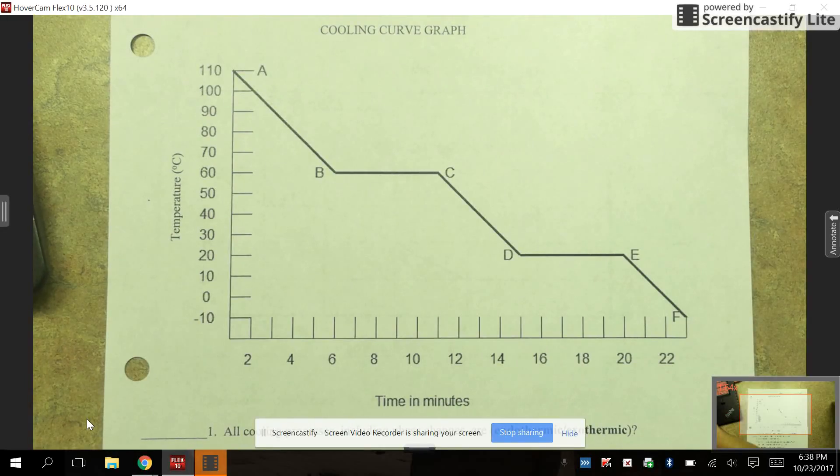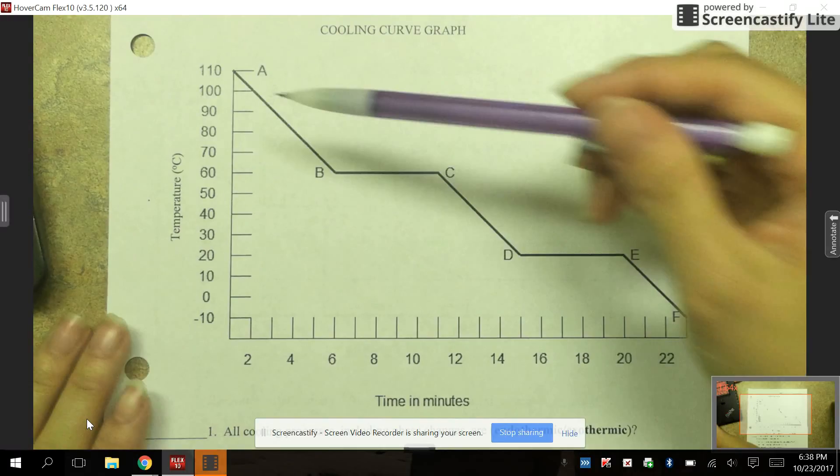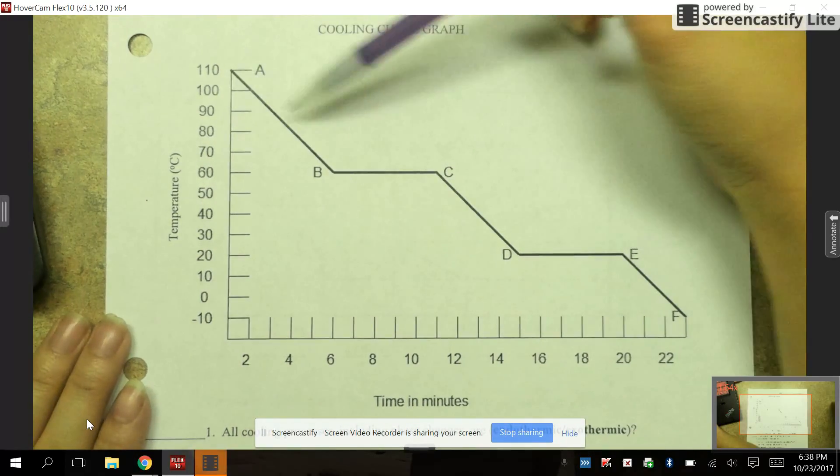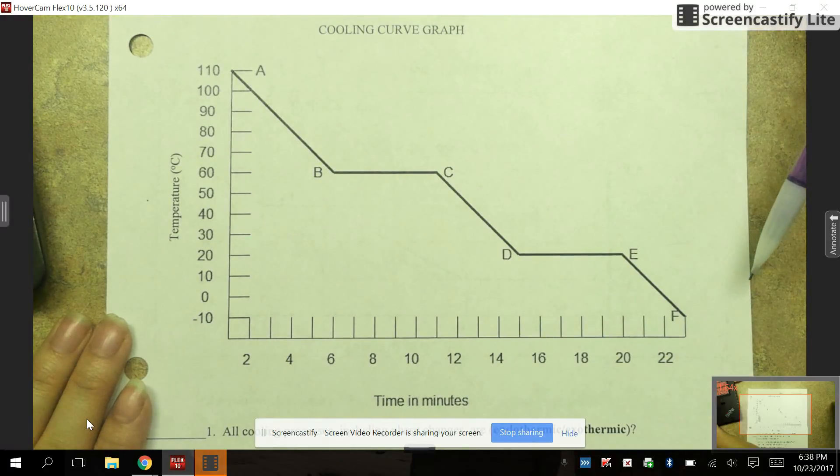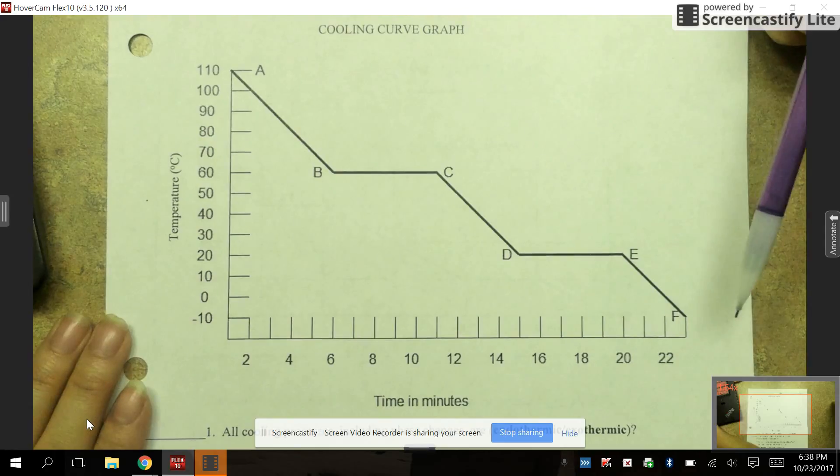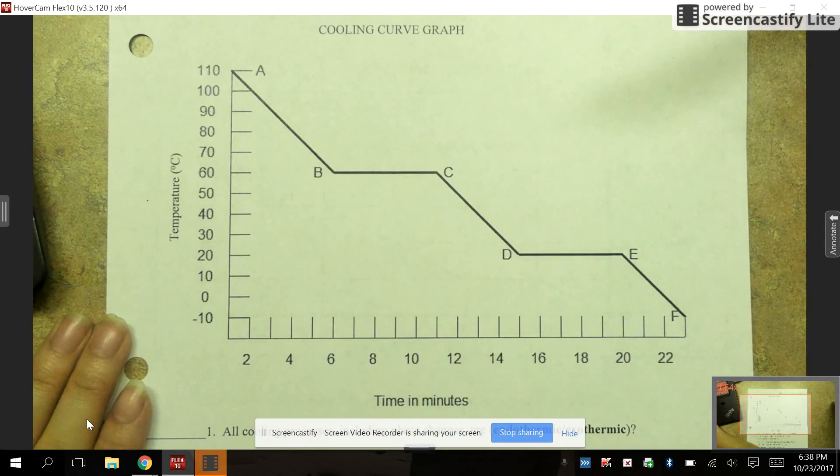Today we're going to look at heating and cooling curve graphs. These heating and cooling curve graphs basically show us what happens with temperature over time. As we go through and look at these different heating and cooling curves, we're going to see how as the temperature changes over time whether our substance is going to be in a solid, liquid, or gas form.